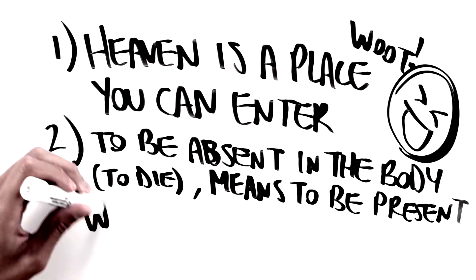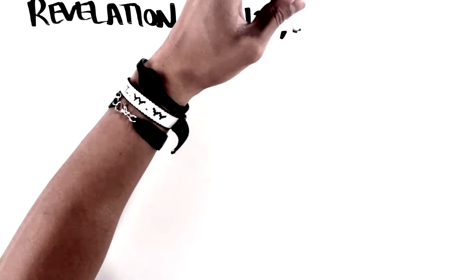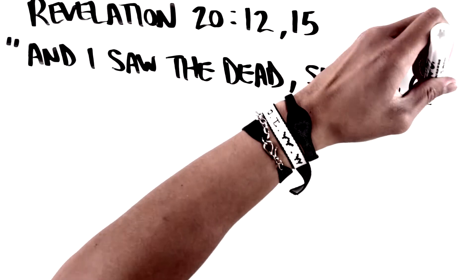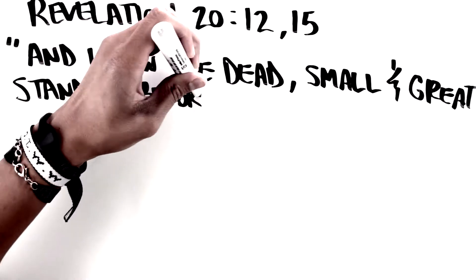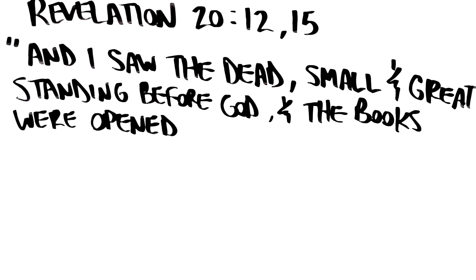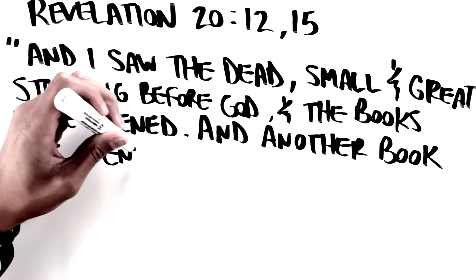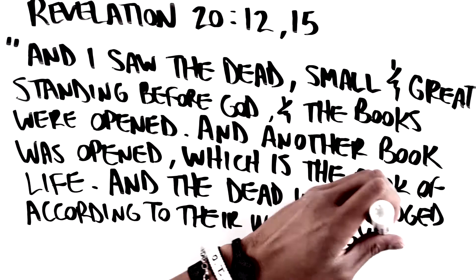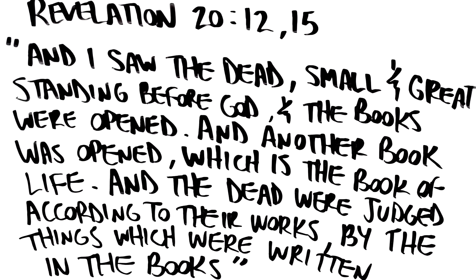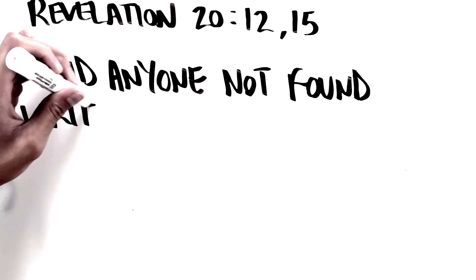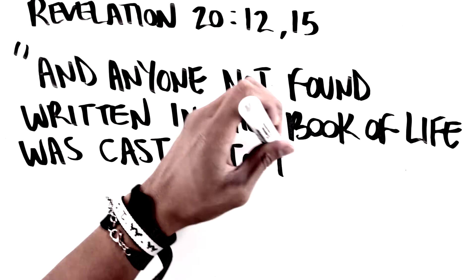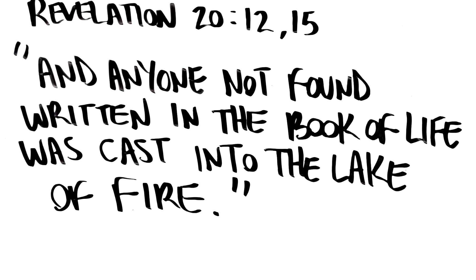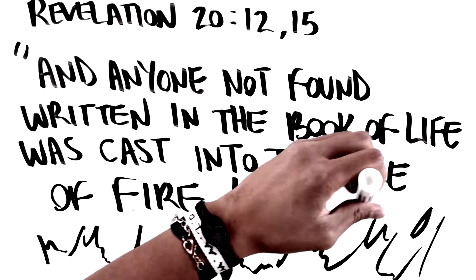Let's look at hell now, Revelation 20, verses 12 and 15. And I saw the dead, small and great, standing before God, and books were opened. And another book was opened, which is the book of life. And the dead were judged according to their works by the things which were written in the books. And anyone not found written in the book of life was cast into the lake of fire. It's in these verses that we see that hell is a real place and some people will live there forever.